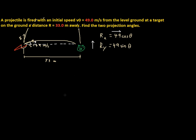Let's put that into an equation. We know that change in X equals V₀ times T. We can substitute in our values: 33 equals 49 cosine theta times time.